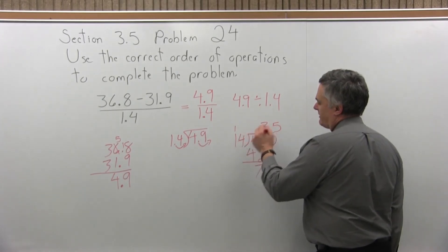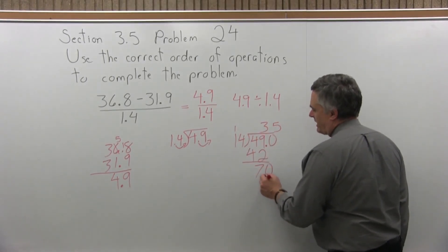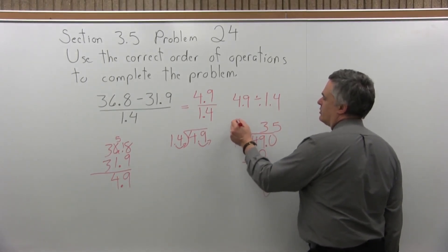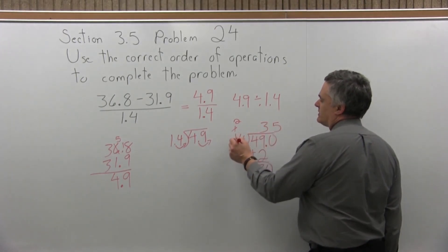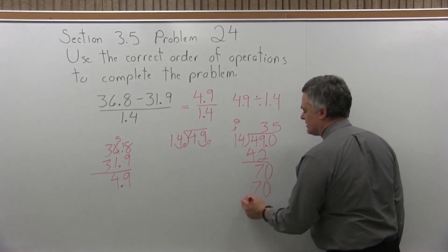So 4 times, 5 times 4 is 20, write the 0 carry the 2, 5 times 1 is 5, 5 and 2 more is 70. So it does go in evenly.